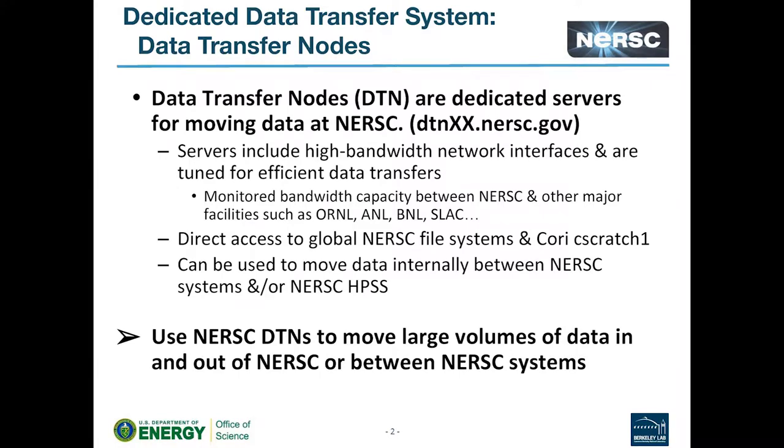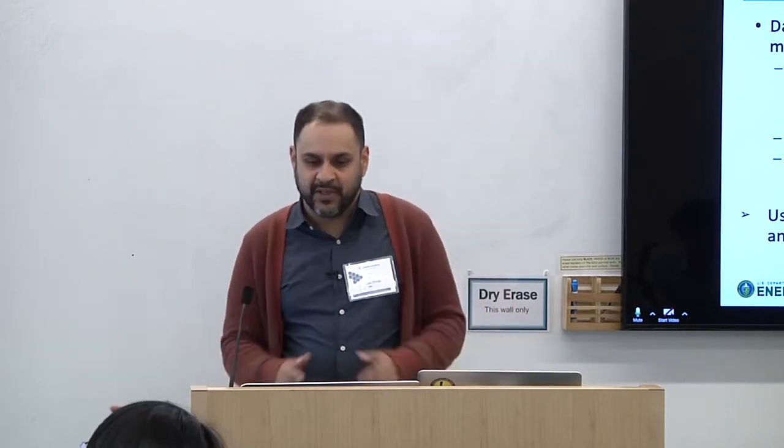We'll start with the data transfer nodes. These are dedicated nodes where you can move data in and out of NERSC, primarily configured to use Globus and GridFTP. These servers are tuned for high bandwidth network transfers and doing these very efficiently — things like buffer sizes are tuned and their network interfaces are hooked up directly to ESnet so you're getting the full bandwidth. We monitor performance of these transfers between us and other sites.